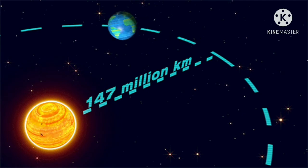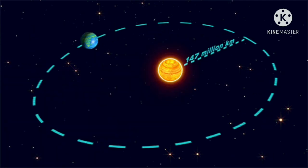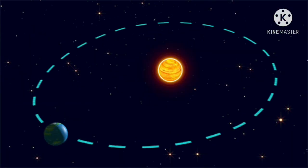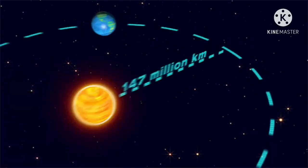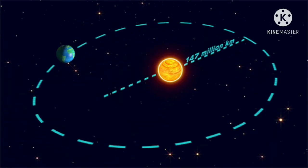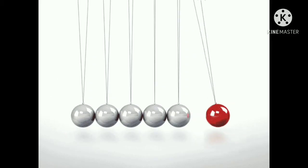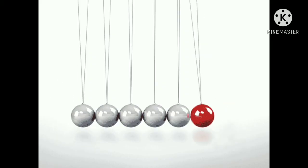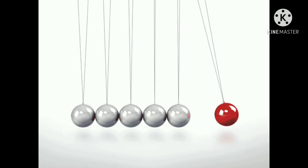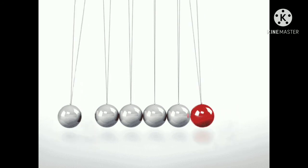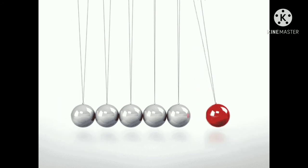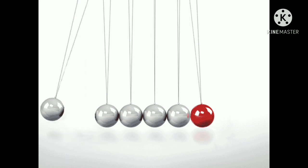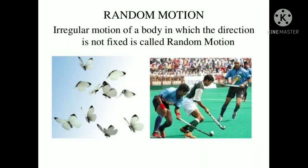The Earth is at 147 million kilometers on one side and 152 million kilometers on the other side as it rotates around the Sun. Even the pendulum has a periodic motion — within one second it moves in its own position. Next is random motion.